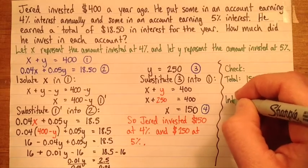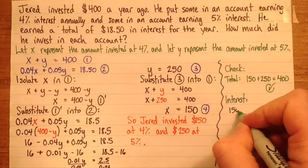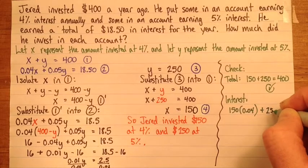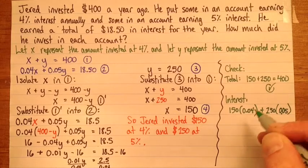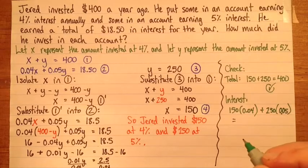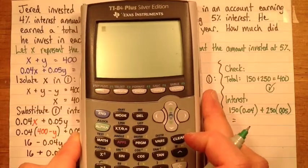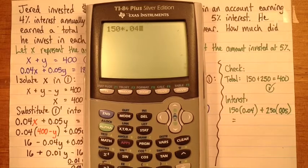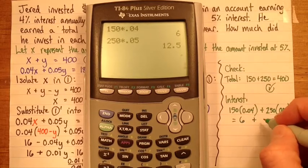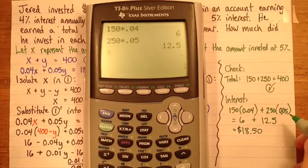And then interest. If these are the amounts he invested, then he would have earned $150 times 4%, plus $250 times 5%. So remember to get those 0.04 and 0.05, you just divide 4 and 5 by 100. Right. Now I'll check this in my calculator. 150 times 0.04 is $6 from that account. And then 250 times 0.05 is $12.50. So altogether that's $18.50. So that's perfect.